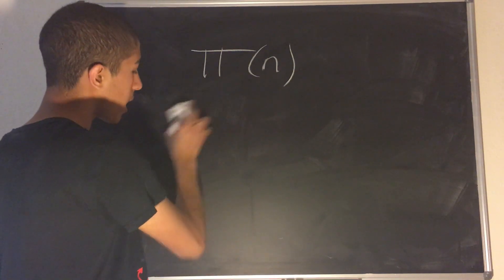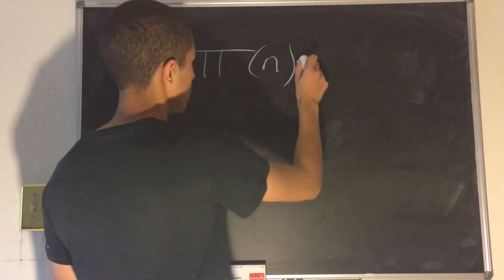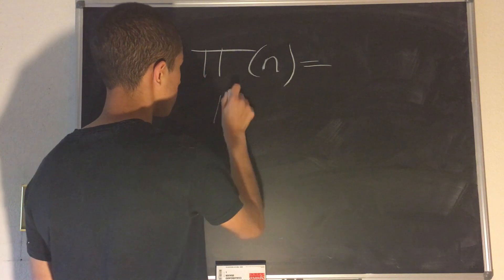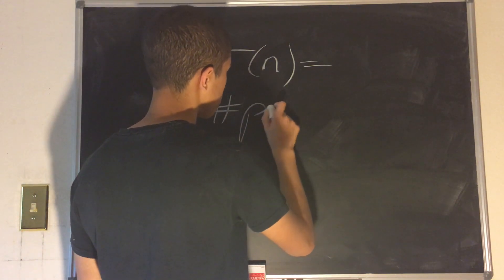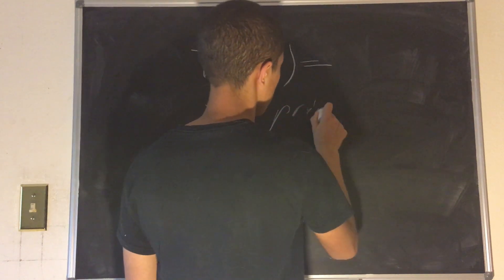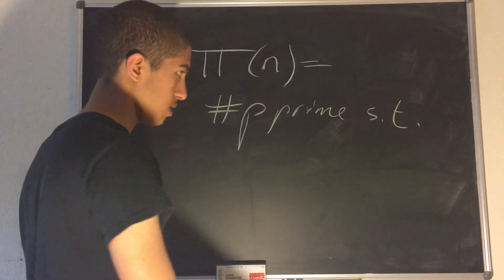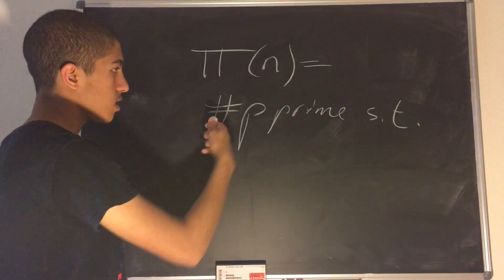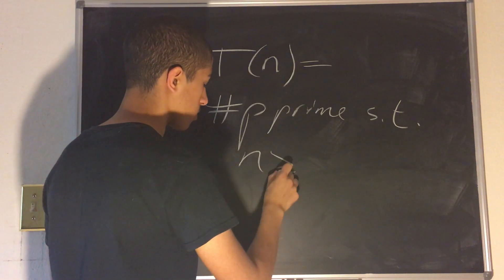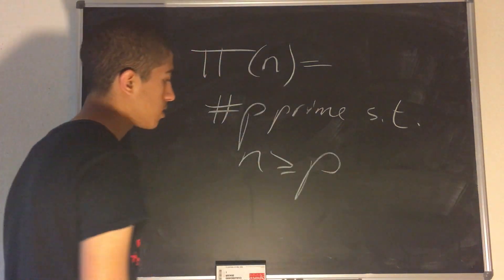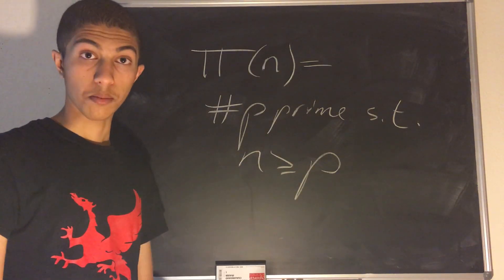π(n) can be defined as the number of primes p, such that n ≥ p. So it counts the number of primes less than or equal to some n.